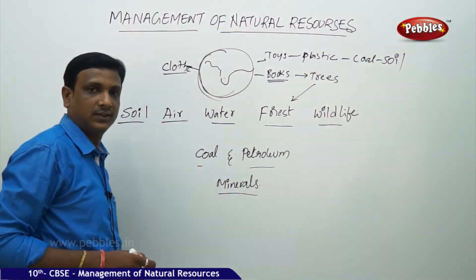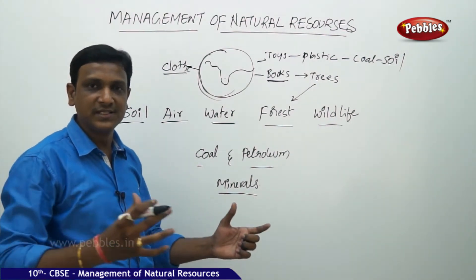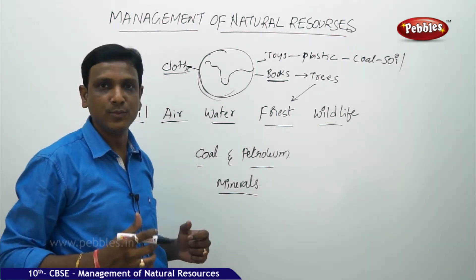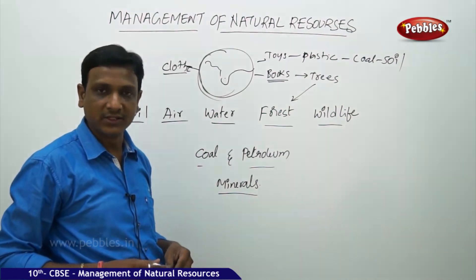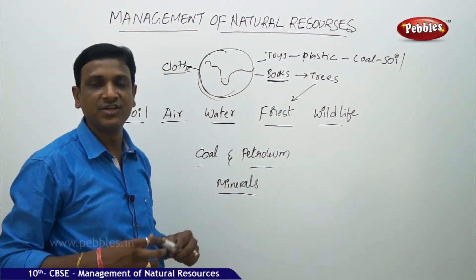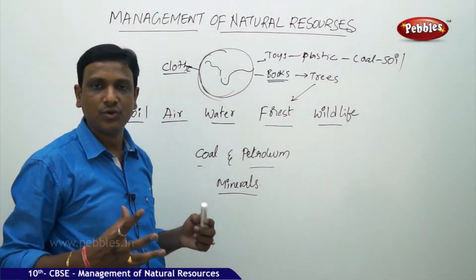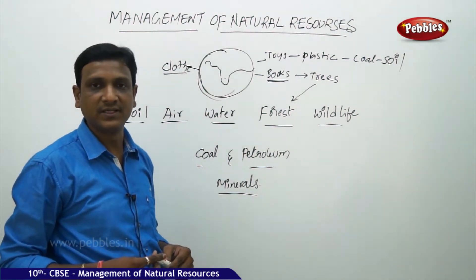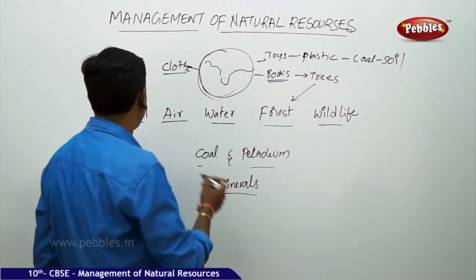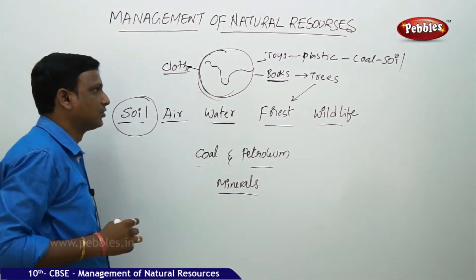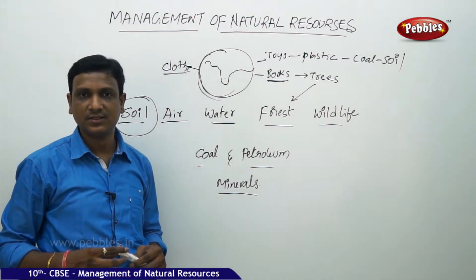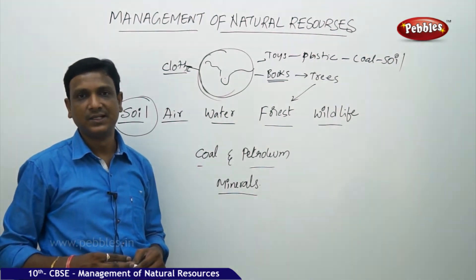We also need utensils to cook our food — steel, brass, and aluminum utensils — and many metals are required in our houses for construction and kitchenware. All these metals come from the earth, that is, from the soil. So soil is a source of various materials, and all these are the natural resources which provide the materials necessary for our day-to-day life.